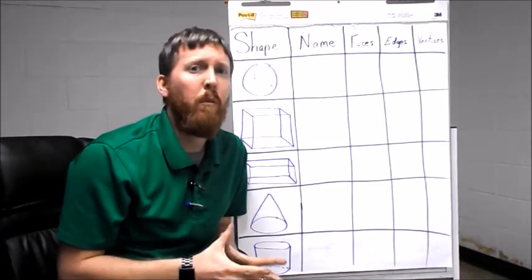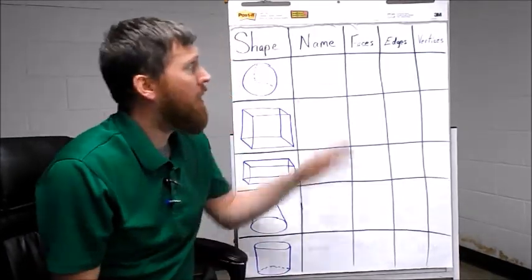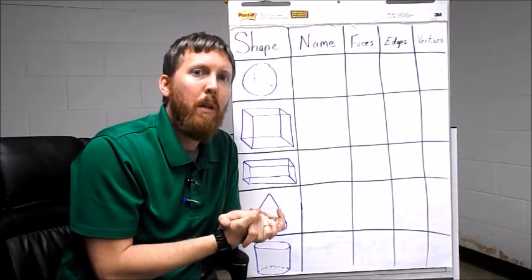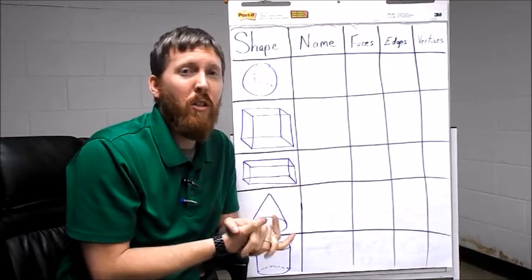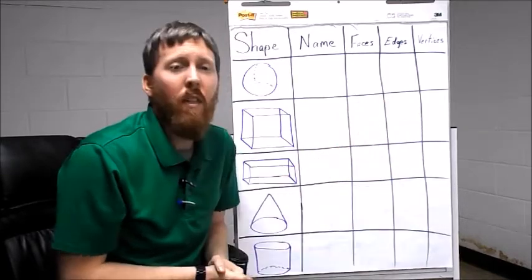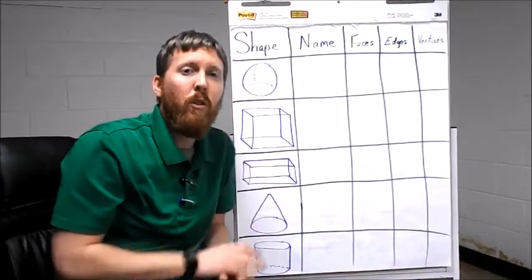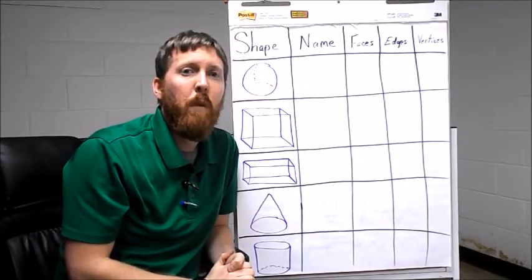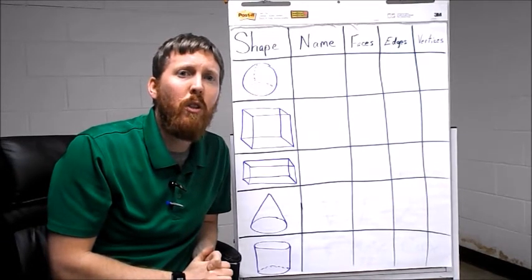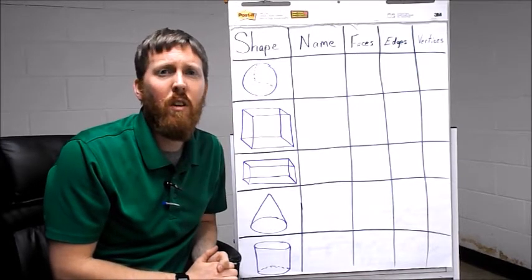When we talk about three-dimensional shapes in our classroom, we talk about different properties. First, we need to know the name. Second, they have faces - the flat parts of the three-dimensional shape. Then we talk about edges, and they have vertices. I've drawn our three-dimensional shapes up here on my anchor chart and I'm going to talk to you about a way to figure out faces, edges, and vertices.